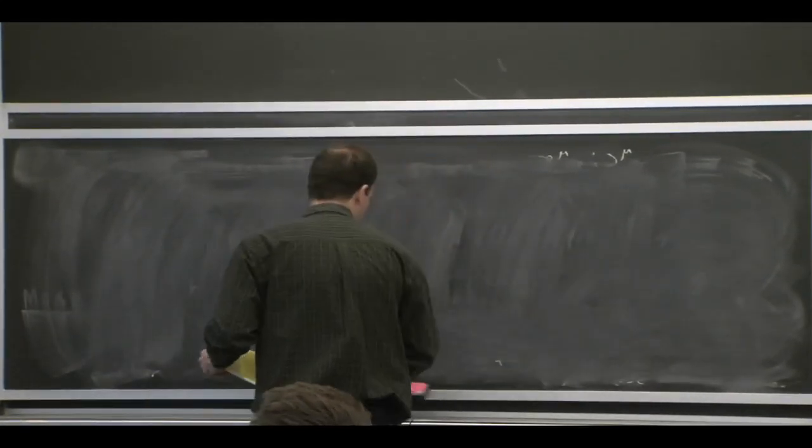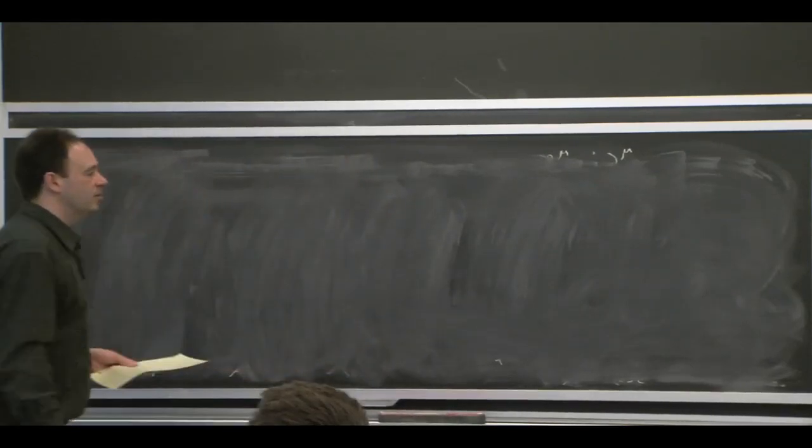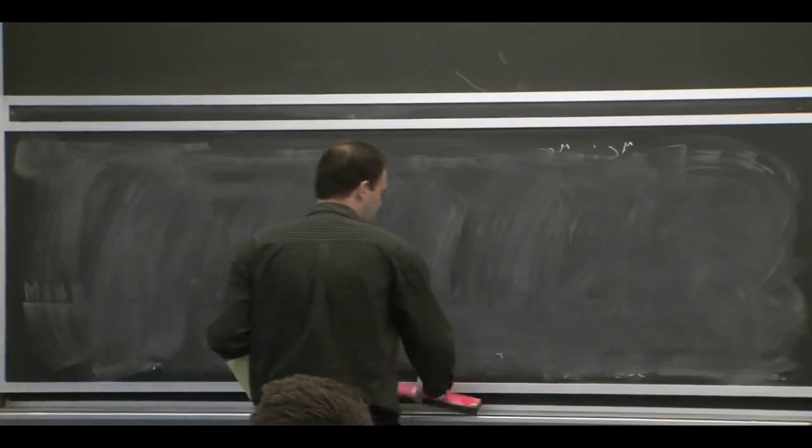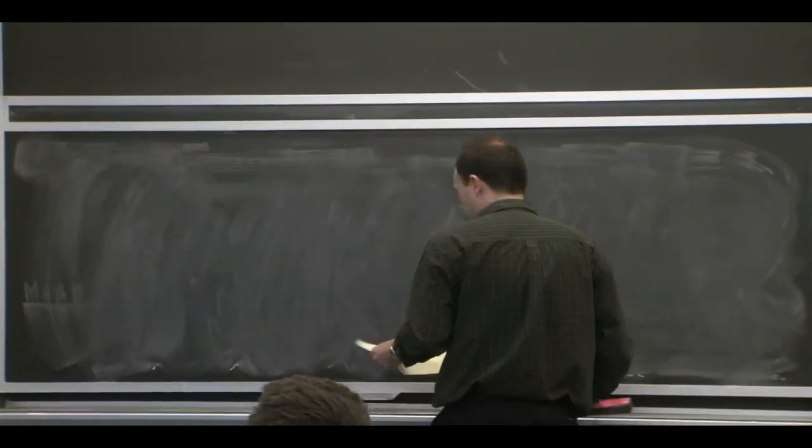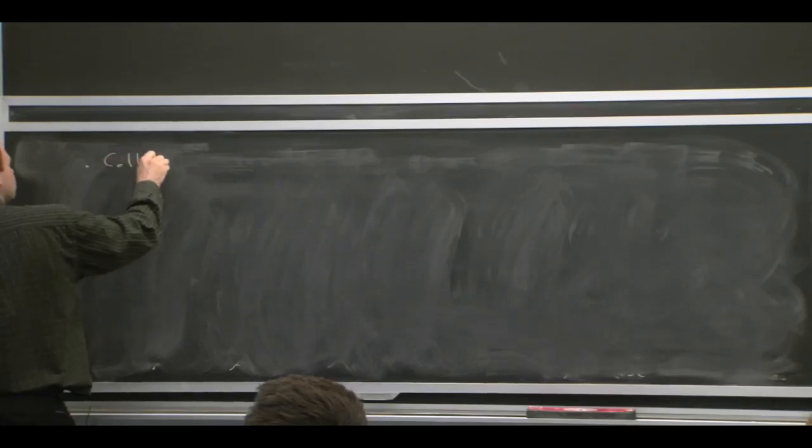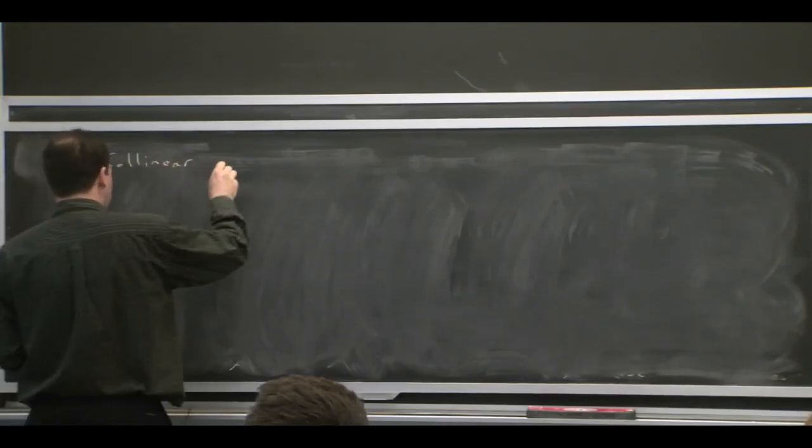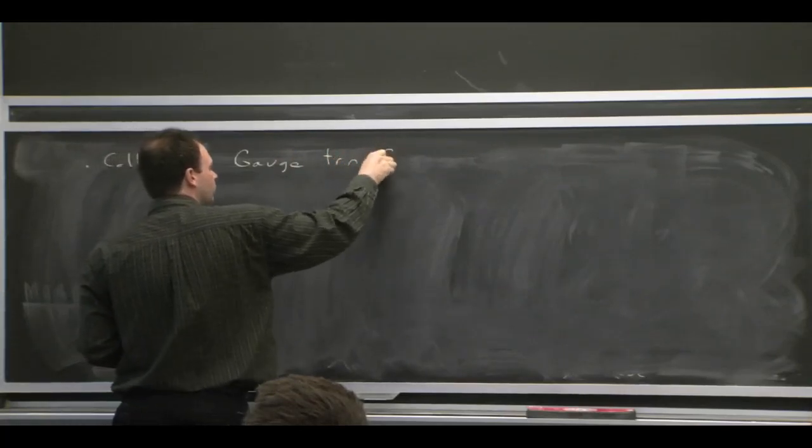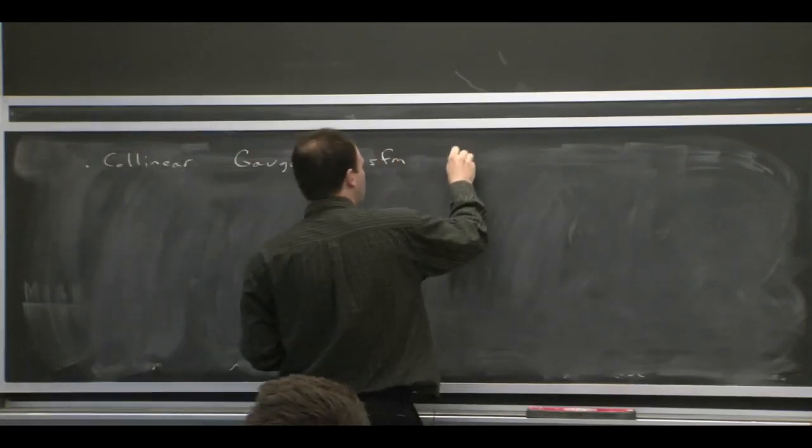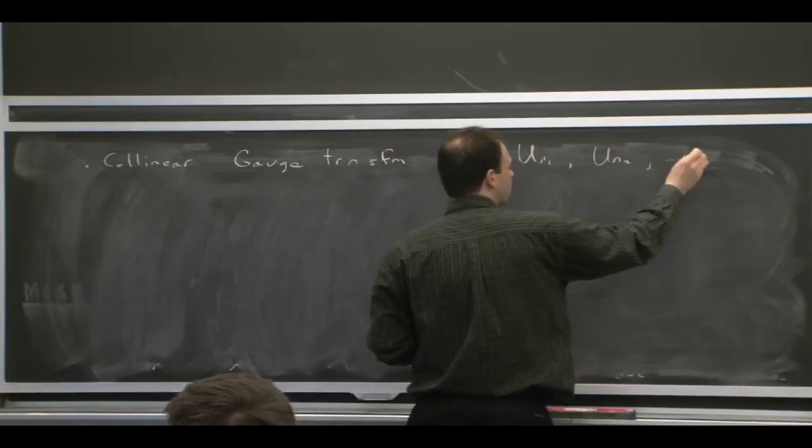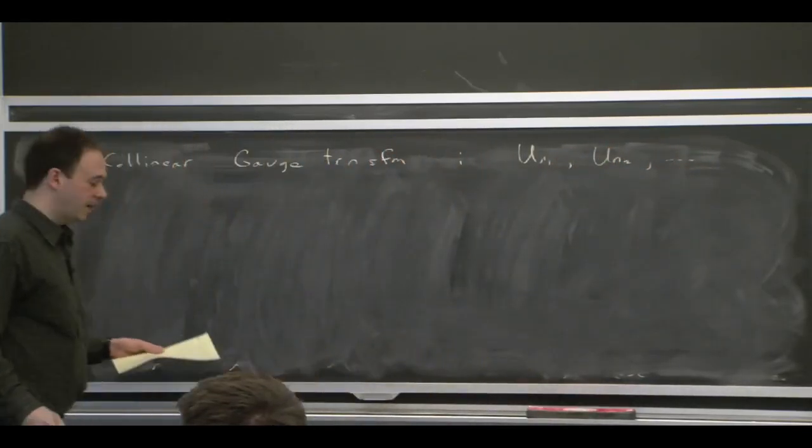And fields won't transform under the other guys. n1 collinear fields won't transform under the n2 gauge transformation. Because again, that would spoil the power counting for the momenta. So at some level, it's very intuitive to figure out what the results are. I'm not going to go through it. But suffice it to say that we would have collinear gauge transformations for each collinear guy.